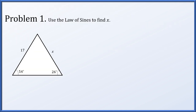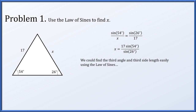Problem one: let's use the law of sines to solve for this missing length x. The sine of an angle, 54 degrees, divided by the length across from it x, will be equal to the sine of an angle divided by the length across from it for all choices in one given triangle. So sine 54° over x equals sine 26° over 17. Solving for x gives 17 sine 54° over sine 26°, and that's it.